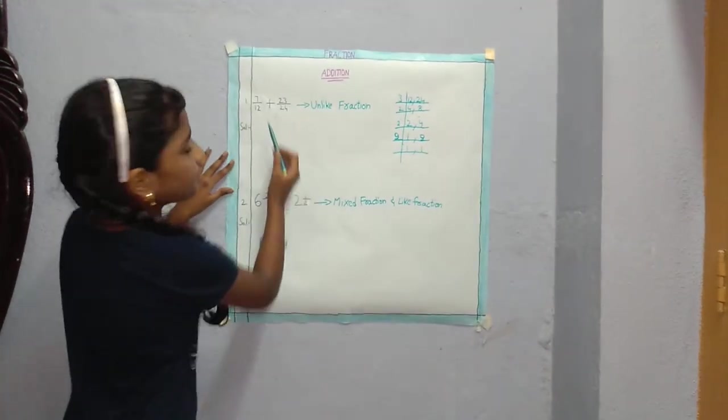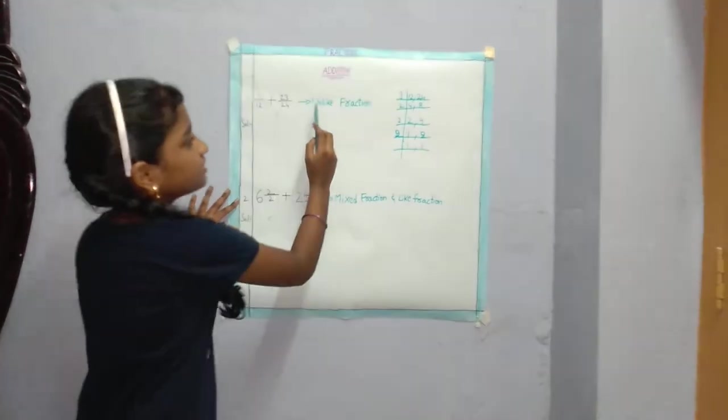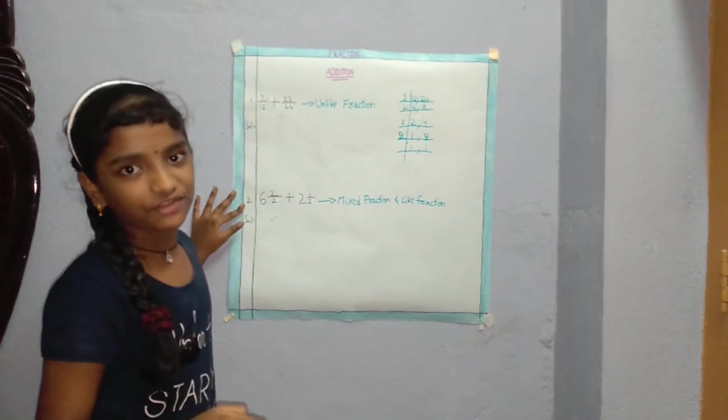First one: 7 by 12 plus 23 by 24. This is unlike fraction, so we have to convert into like fraction.